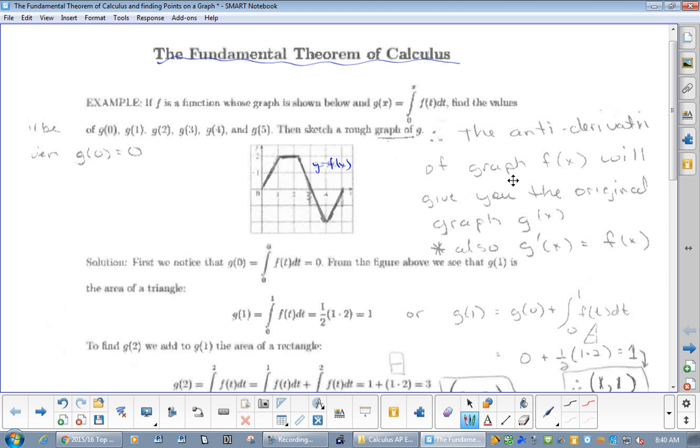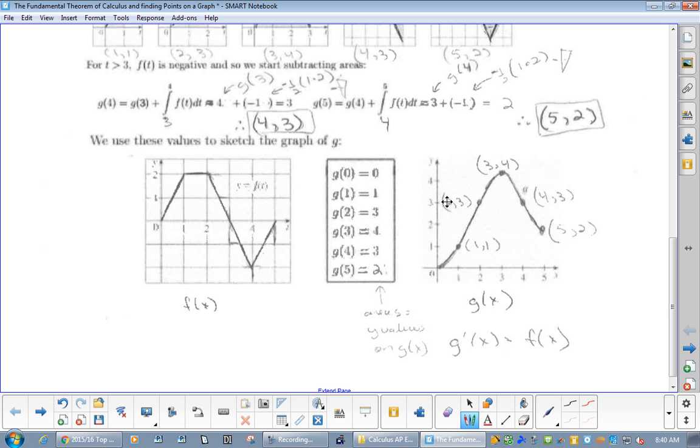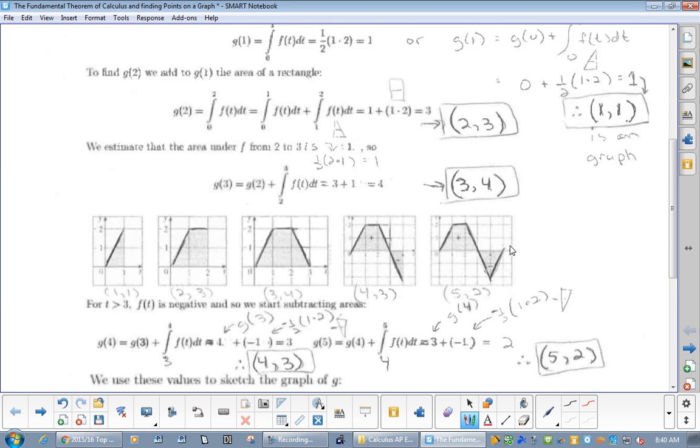So, the anti-derivative of f(x), this, will give you the original graph, g(x). And we're going to come up with g(x), which is this graph down here. This is the original graph. Derivative was taken to get this graph. Now, we're going to try to take the anti-derivative of this to get this graph.